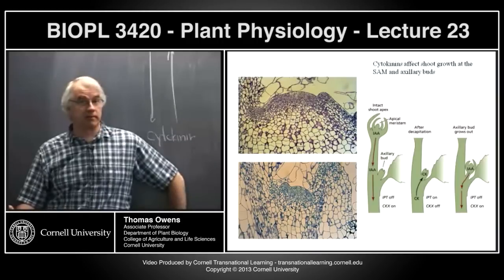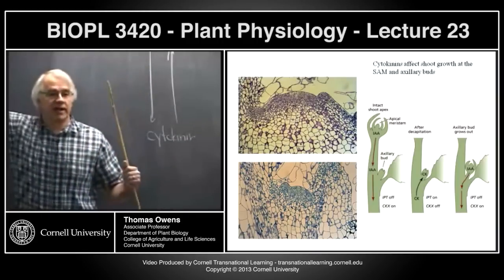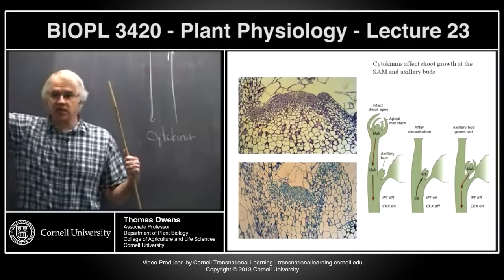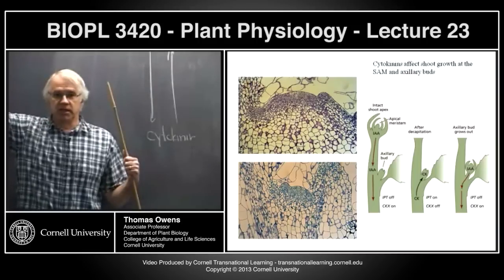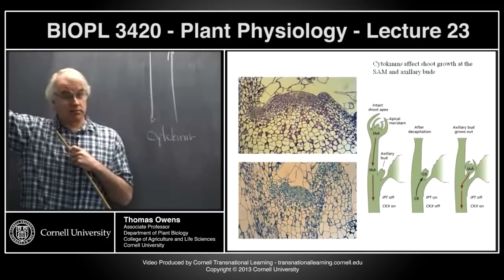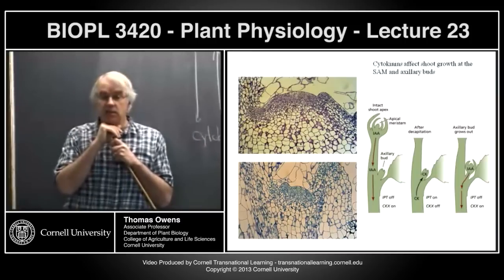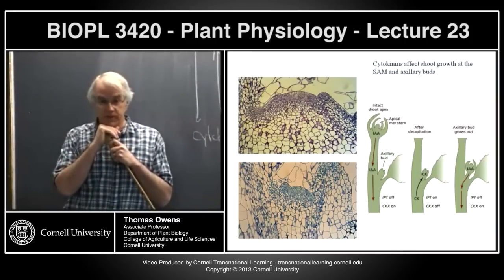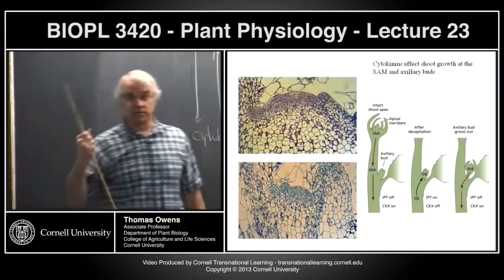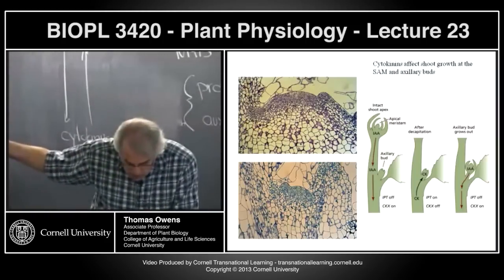Once you activate the axillary bud, it acts as if it were now the shoot apical meristem — it produces its own auxin and takes over the role of apical dominance. So we now have a much more complete picture of apical dominance. Simple experiment: should you be able to take cytokinins, apply them to axillary buds, and induce them to grow? Yes — and you can do that. Applying cytokinins to axillary buds causes them to become active meristems.